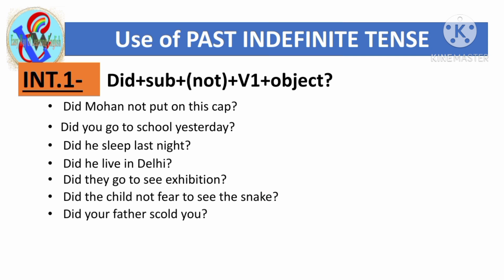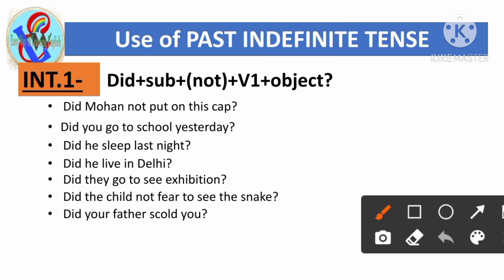'Did your father scold you?' Here 'did' is used first, then the subject 'your father', then 'scold' which is the main verb in its first form, and 'you' is the object.